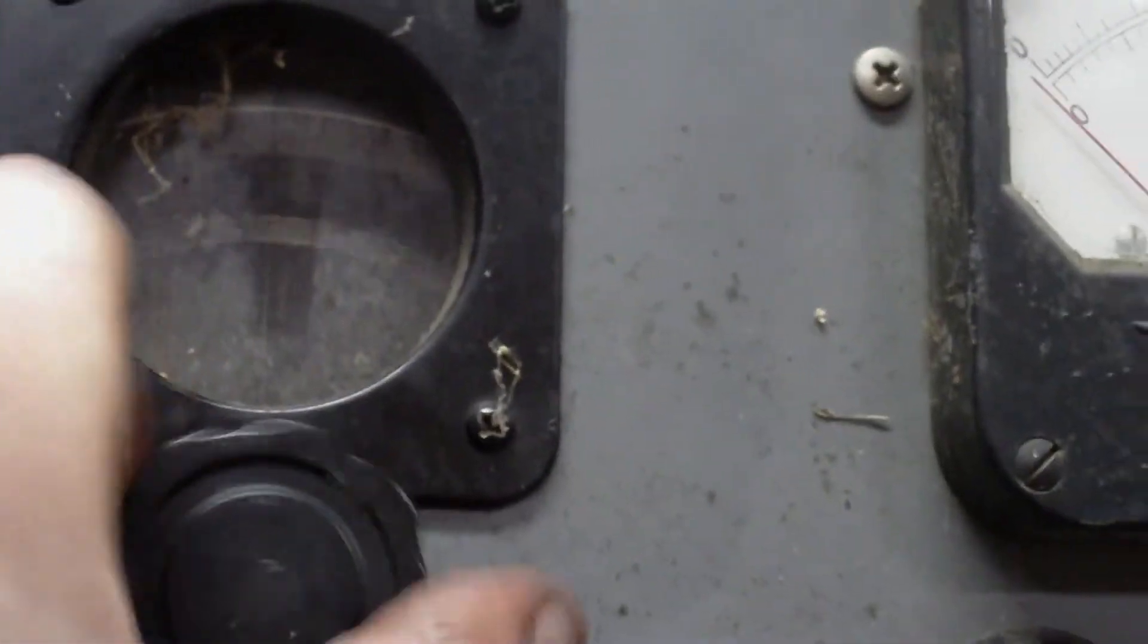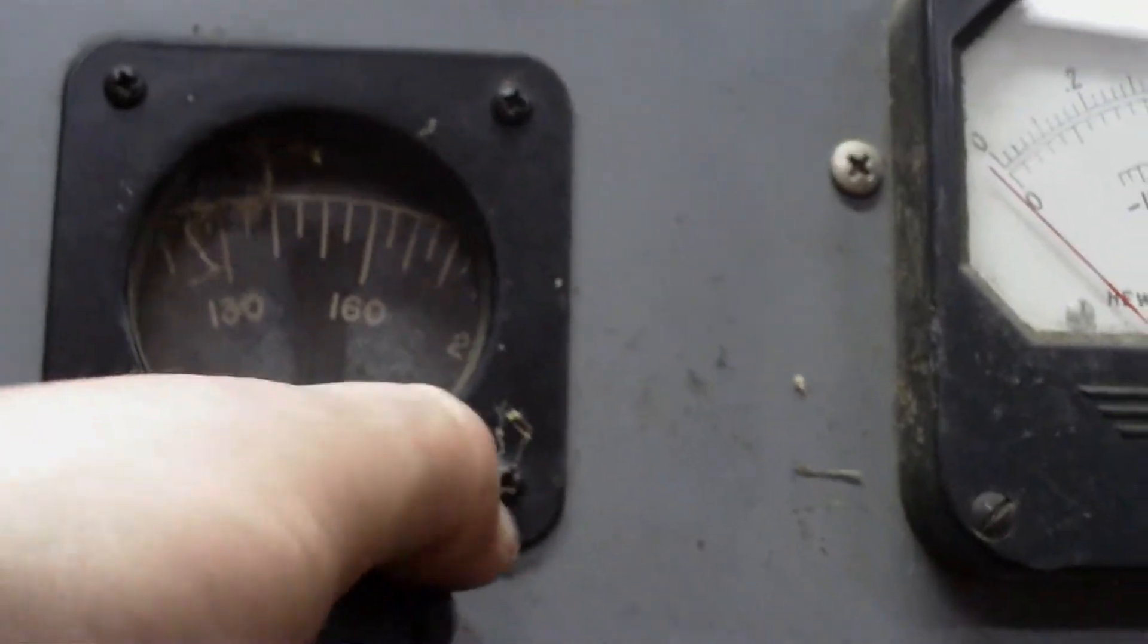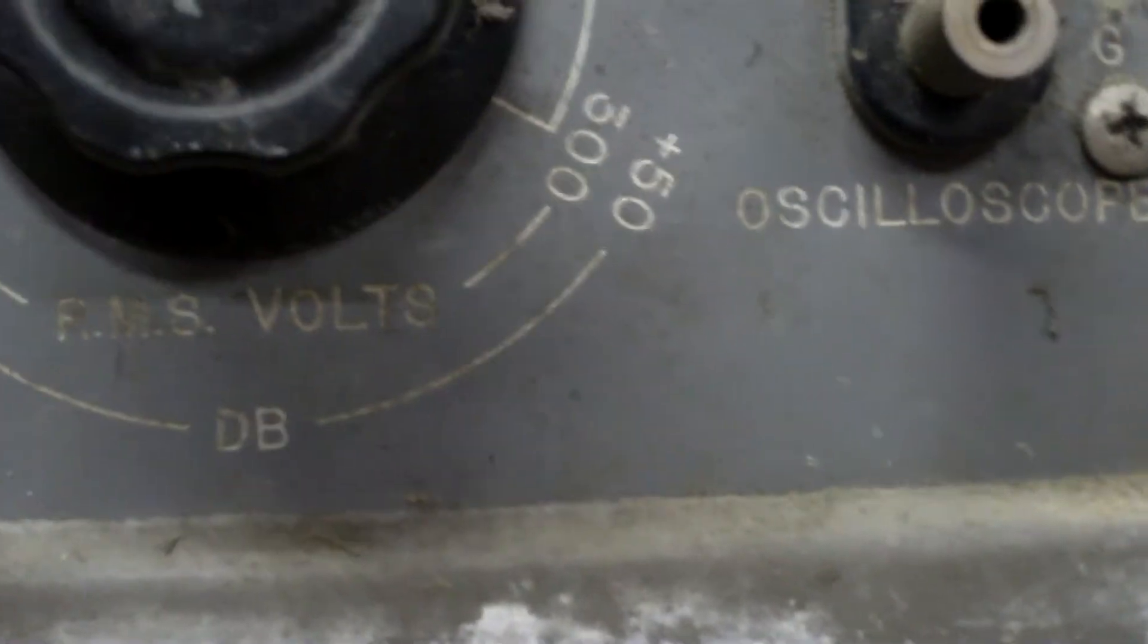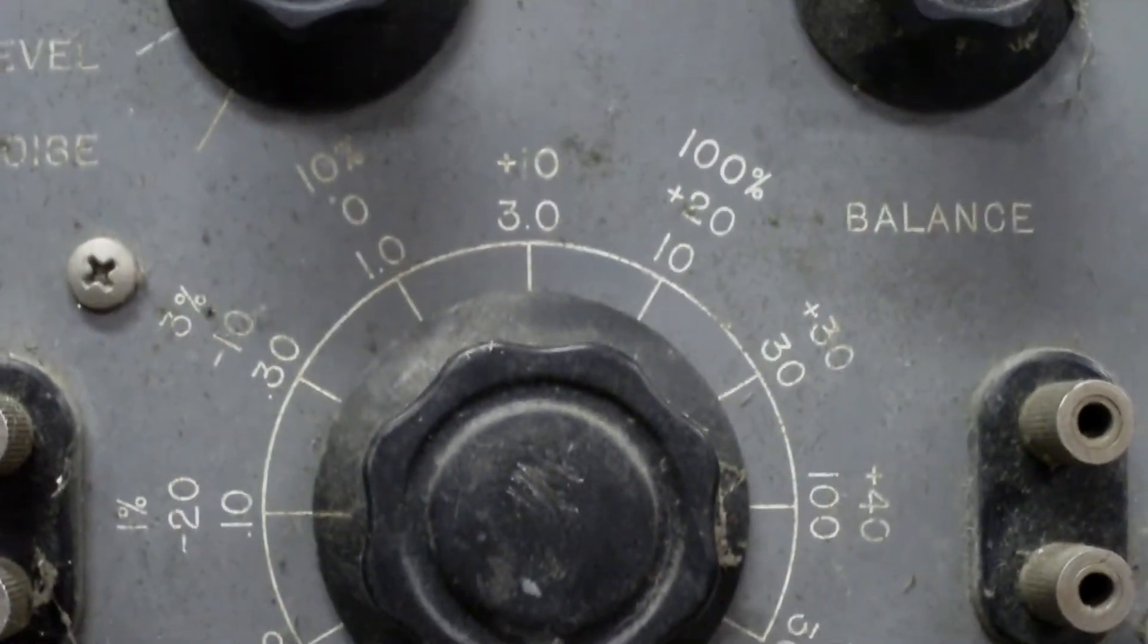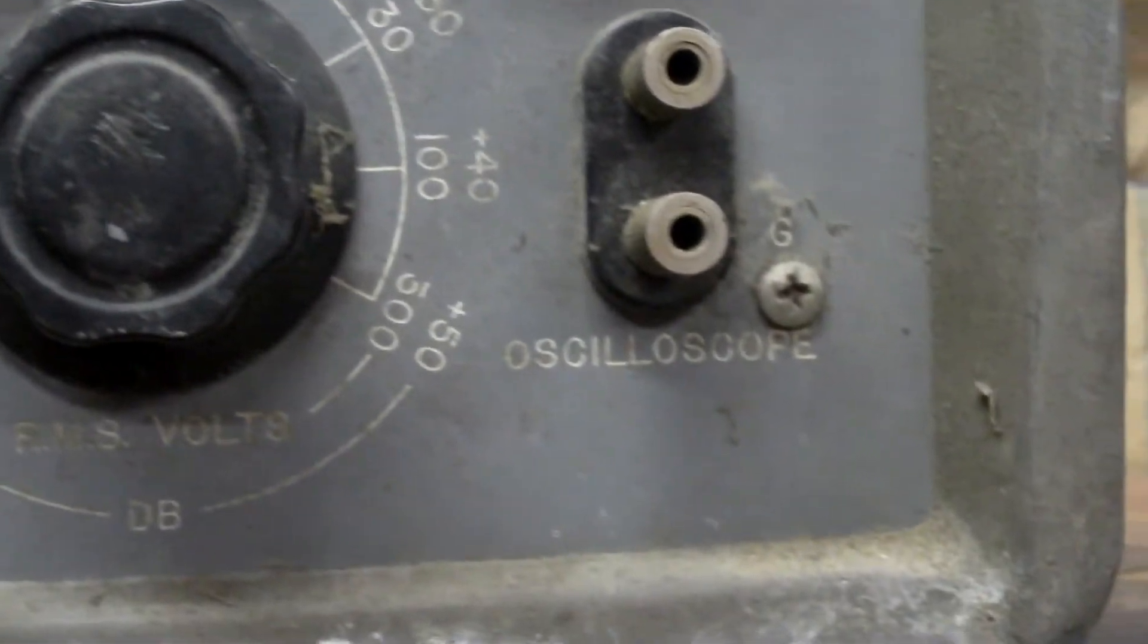You look at a meter in here: F or RMS volts and DB. You see all that? An oscilloscope.